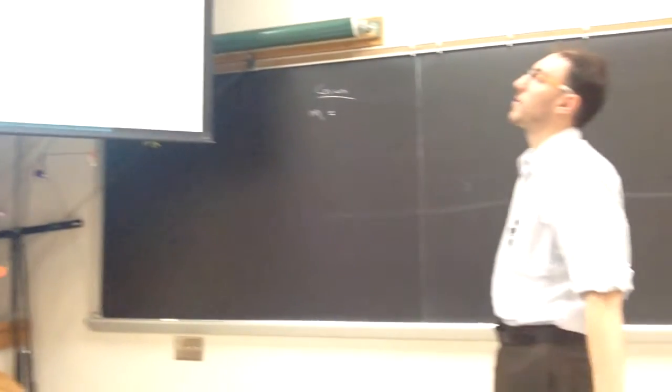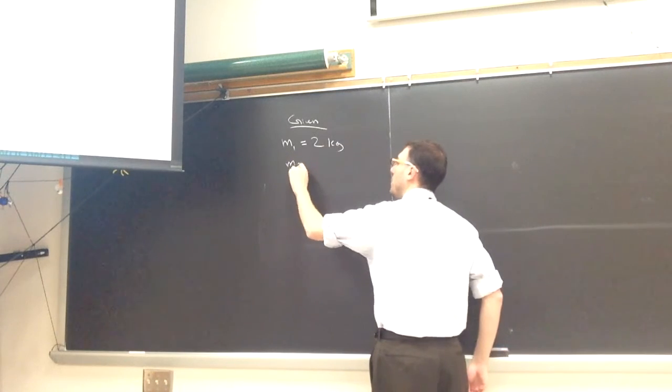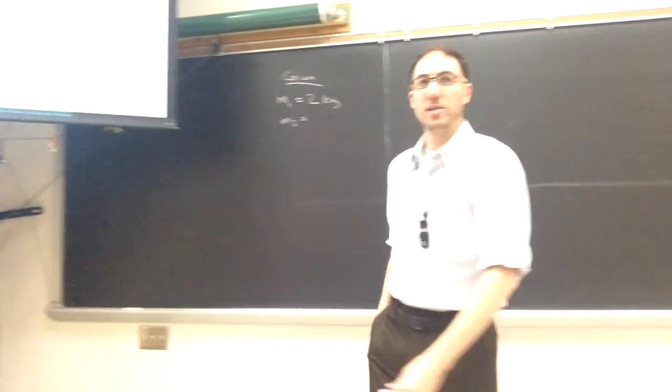The mass of the beverage container is 2 kilograms, and the mass of the forearm is going to be 1.2 kilograms.